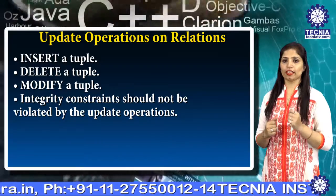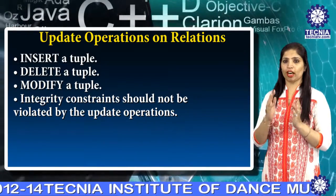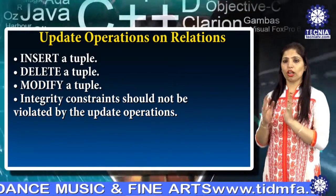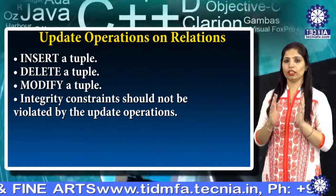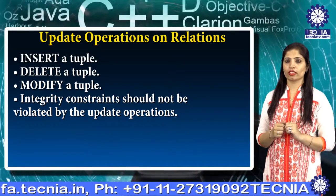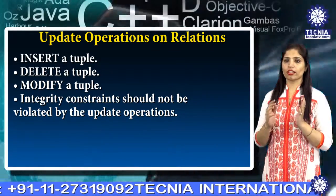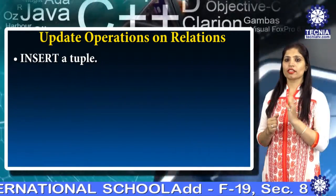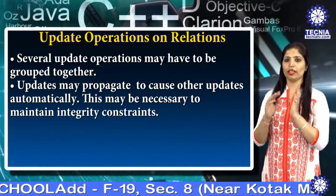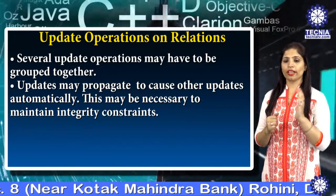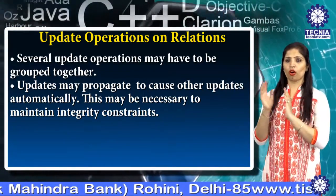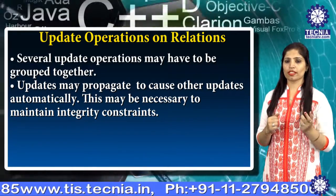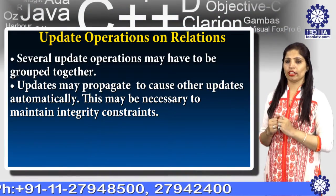Next is delete a tuple — this operation is used to delete a particular record. Modify a tuple is used to alter or add a particular attribute in a relation. The integrity constraint should not be violated by the update operation. Several update operations may have to be grouped together, and the update may propagate to cause other updates automatically to maintain integrity constraints.